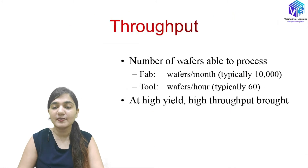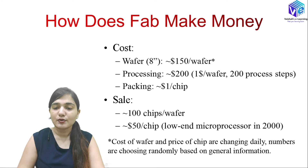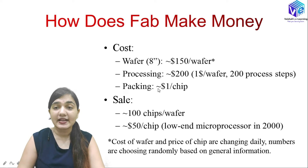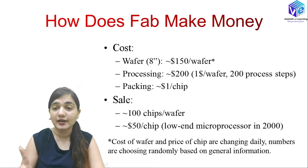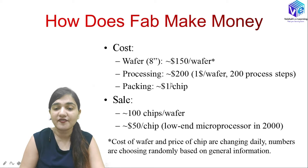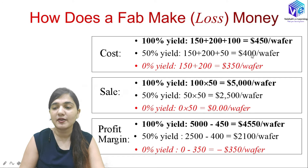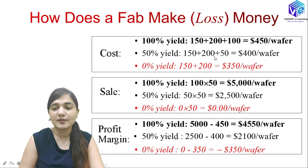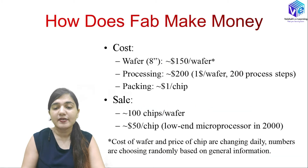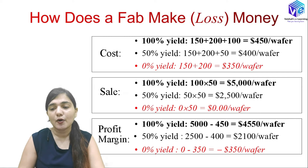In the case of 50% yield, the wafer and processing price remain the same, but during packaging we discover that 50% of chips are defective. We only package the 50 good chips, so packaging cost is $50 instead of $100, making the total cost $400 per wafer. For zero yield, we pay wafer and processing costs but no packaging cost at all, giving a total of $350 per wafer.